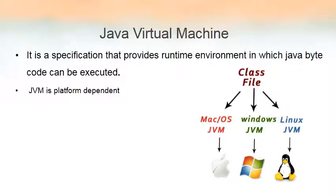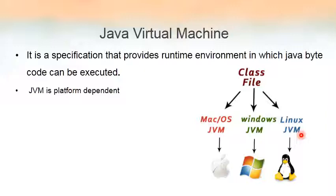The .class files (bytecodes) are given to the JVM. The JVM converts these class files into machine code so that each operating system can understand the lines of code written in the source program and execute exactly what is specified. Again: JVM is platform dependent, and because of this JVM, our Java programs are said to be platform independent.